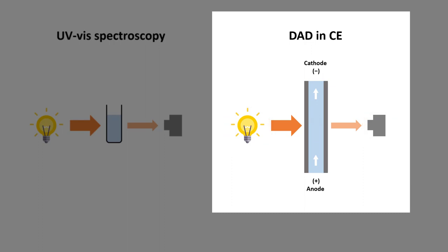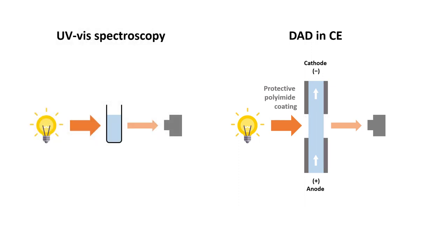To allow the light to pass through the capillary, a small section of the protective polyimide coating is usually removed by etching. Similar to UV-Vis spectroscopy, in this case, the Beer-Lambert's law applies as well.